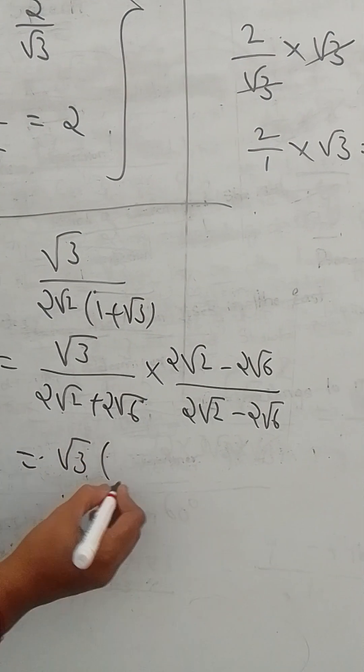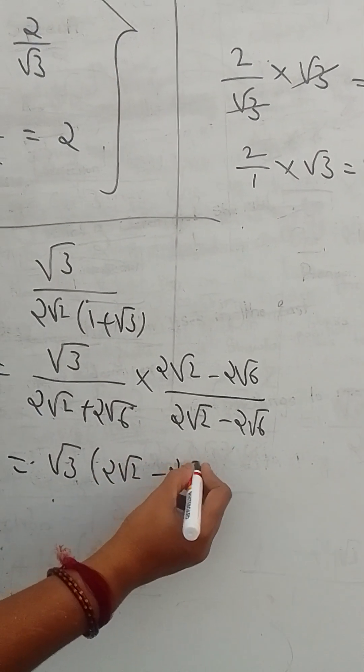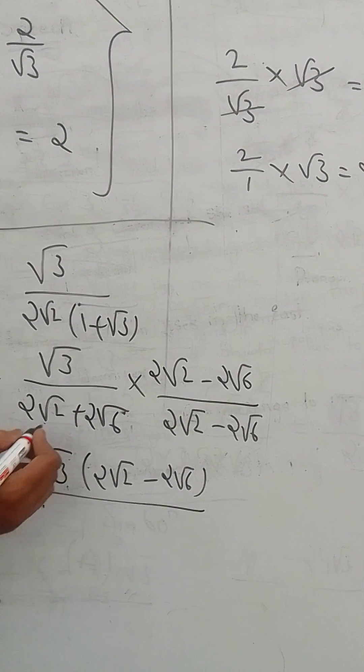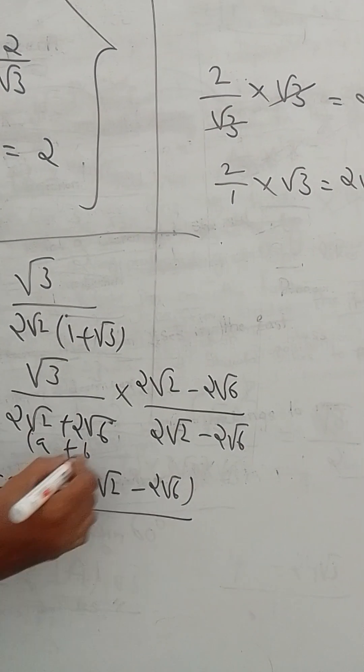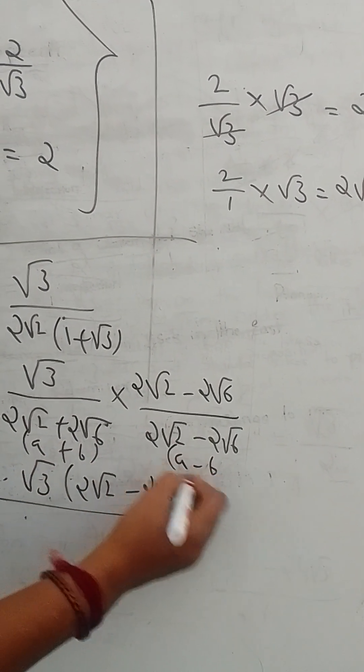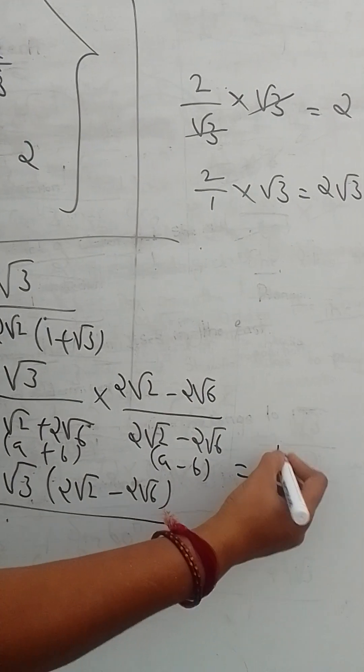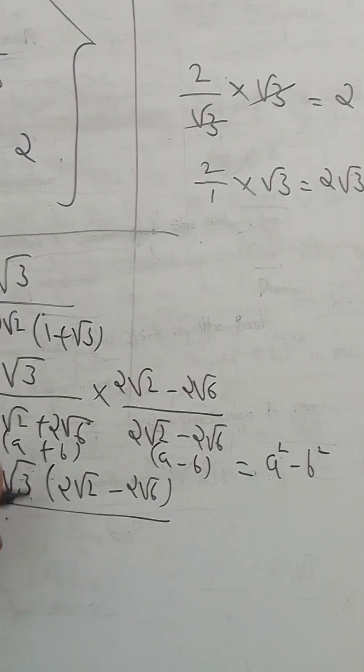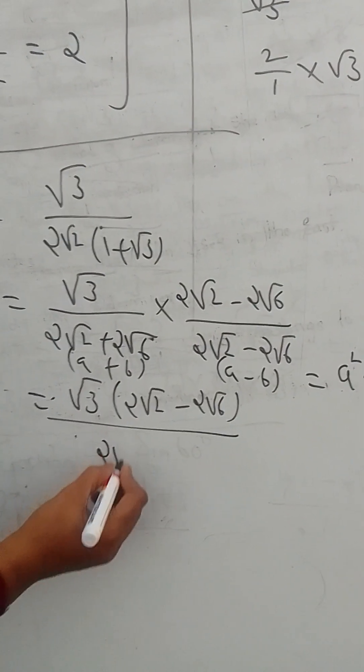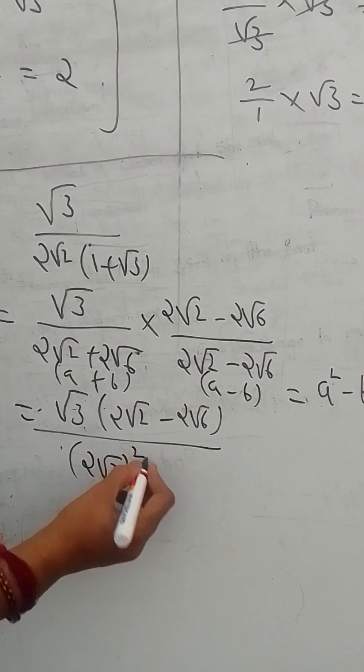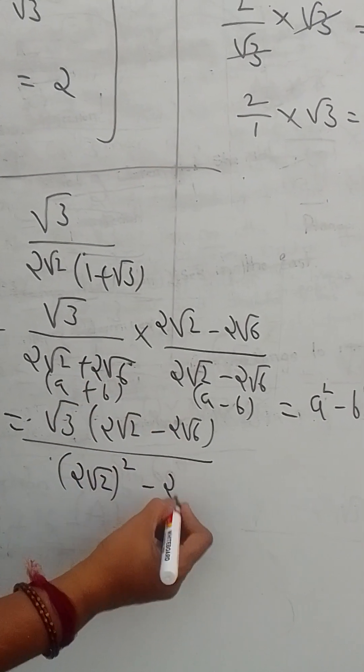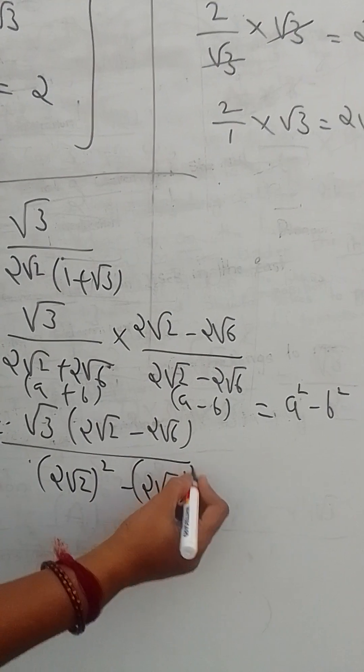Then root 3 into 2 root 2 minus 2 root 6. This is of the form A plus B into A minus B which is equal to A square minus B square. Here, 2 root 2 whole square minus 2 root 6 whole square.